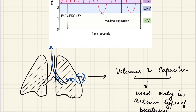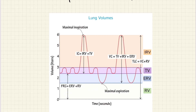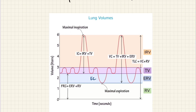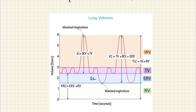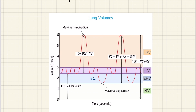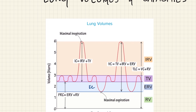So these are the volumes and the capacities — it is very simple. Looking at the diagram: inspiratory capacity is tidal volume plus inspiratory reserve volume; expiratory capacity is tidal volume plus expiratory reserve volume; functional residual capacity is expiratory reserve volume plus residual volume; vital capacity is tidal volume plus inspiratory reserve volume plus expiratory reserve volume; and total lung capacity is vital capacity plus residual volume. This is a very important diagram and you should know it bit by bit. Thank you so much for watching. I'll see you in the next video. Till then, keep studying.